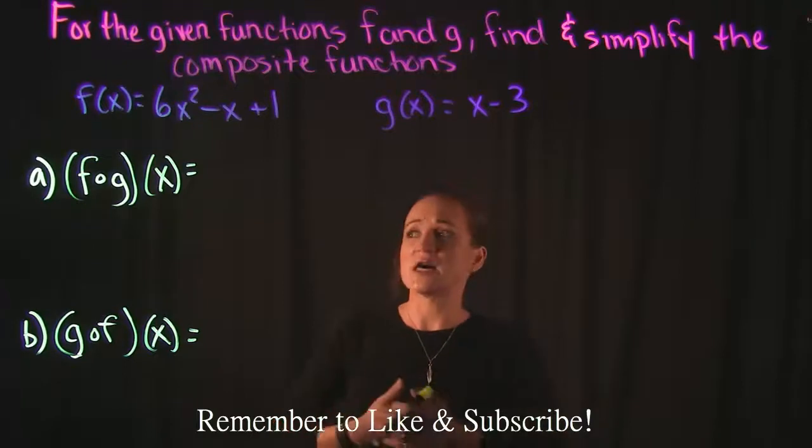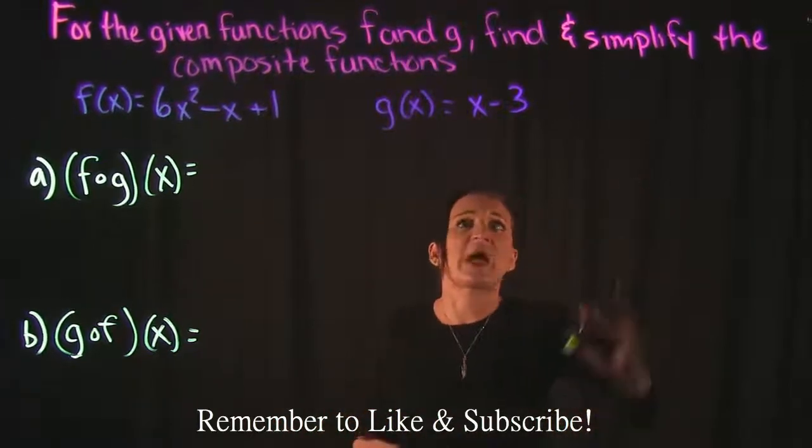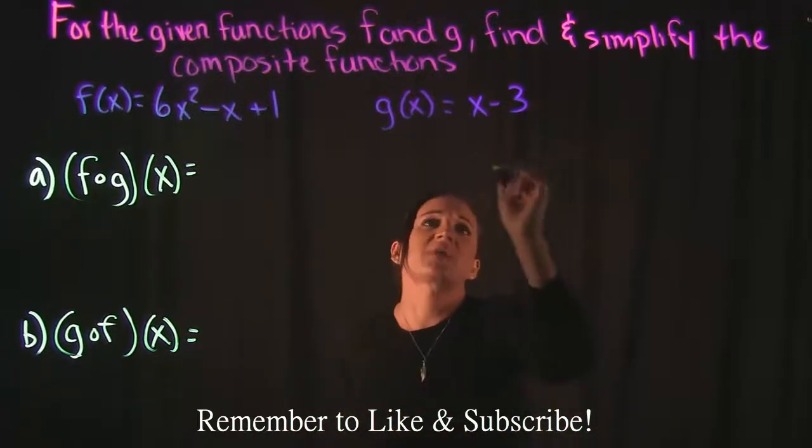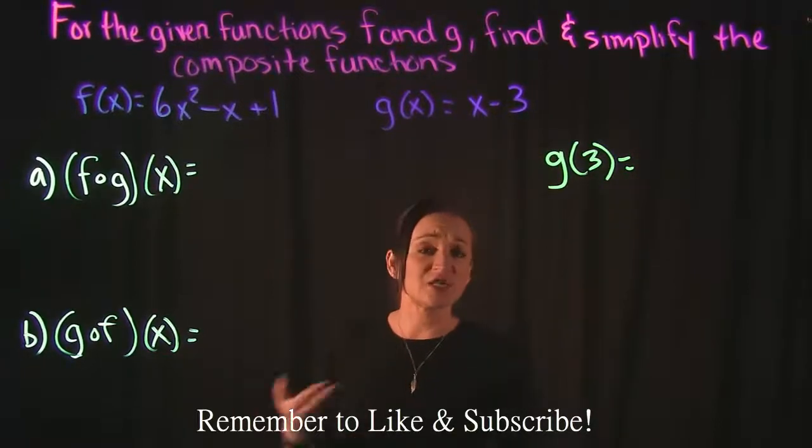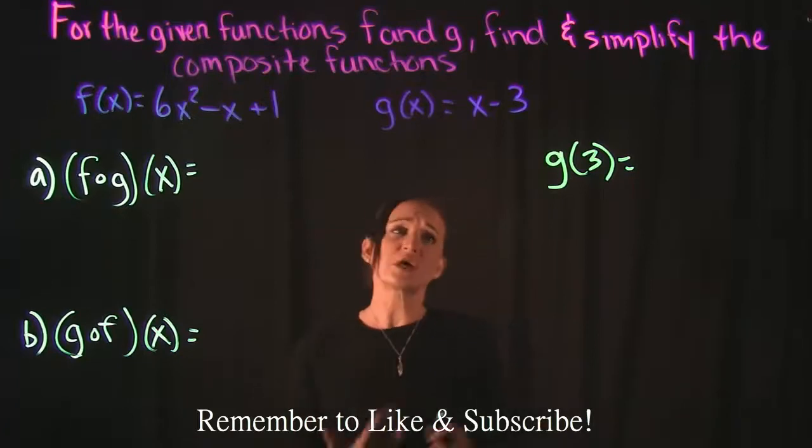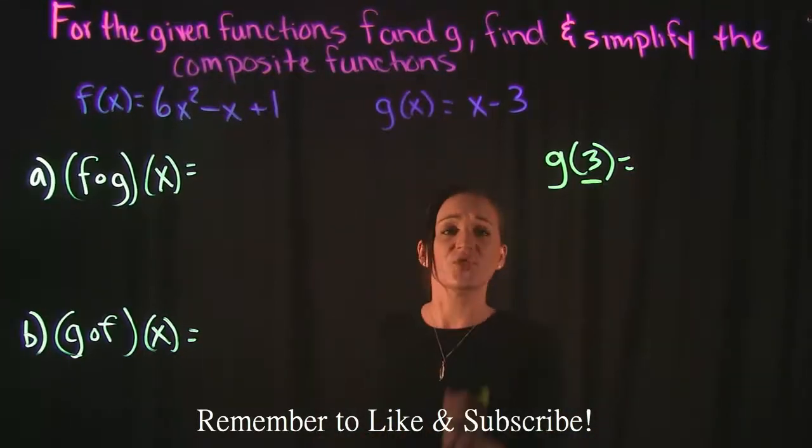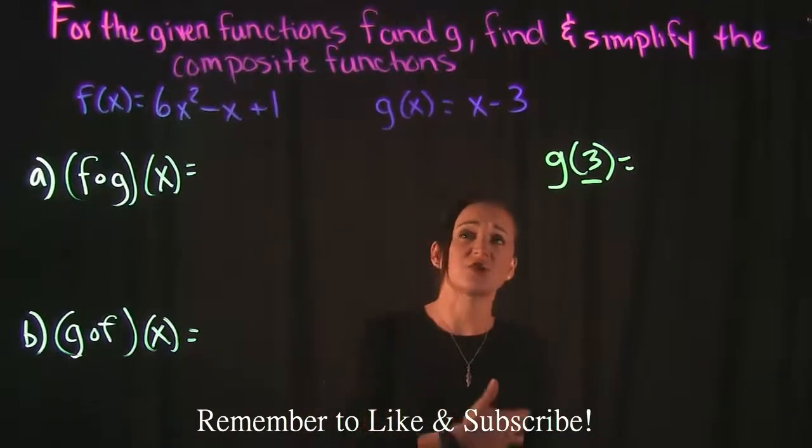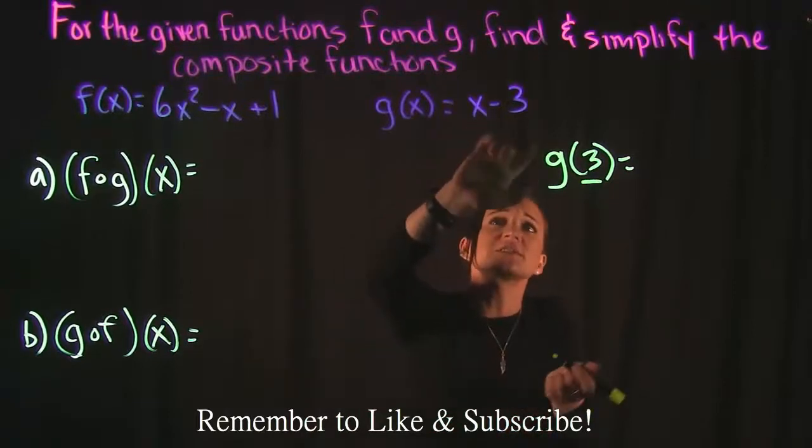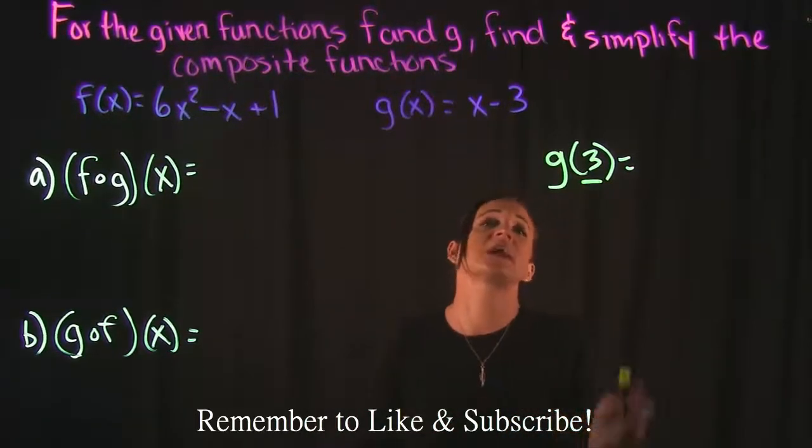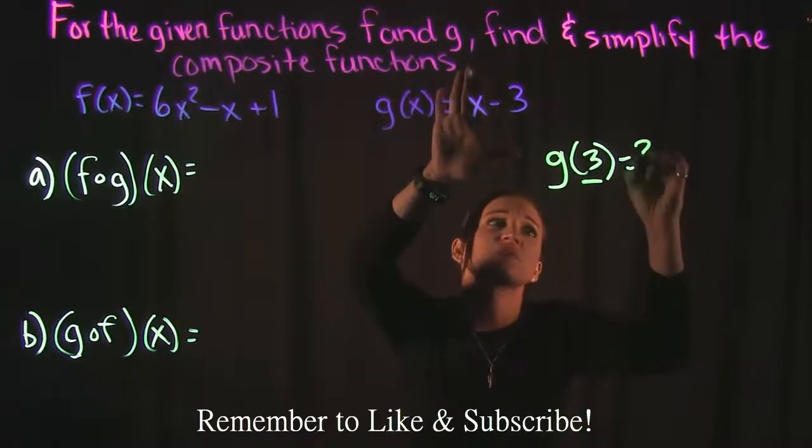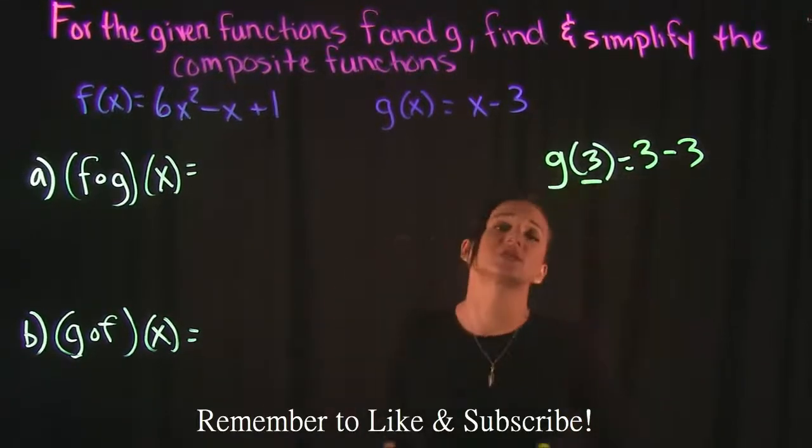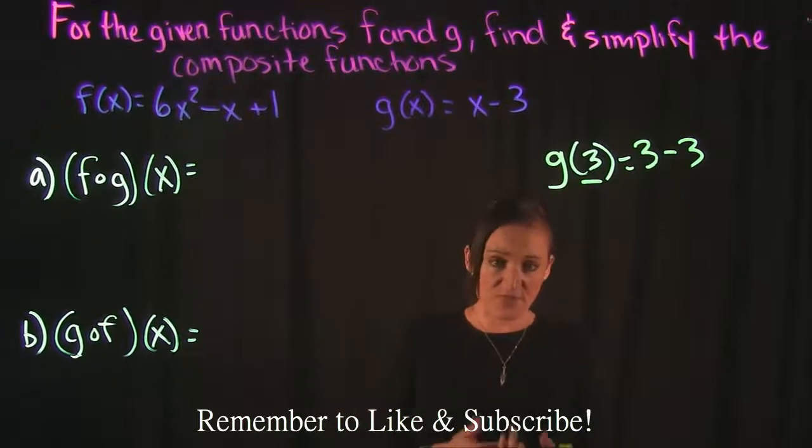So the easiest way to understand this is by doing this. For example if I asked you to find g of 3, hopefully you understand that means to take 3 and plug it in for x into your function. So if g of x is x minus 3 and I want to find g of 3, that means instead of x replace it with 3 and continue on with your function and then simplify from there.